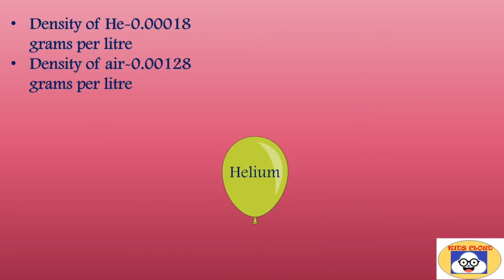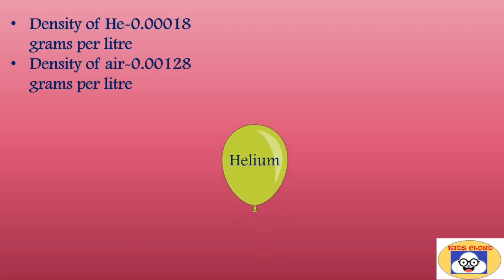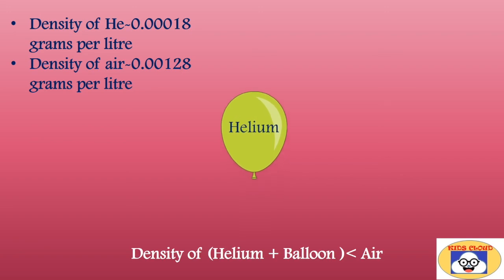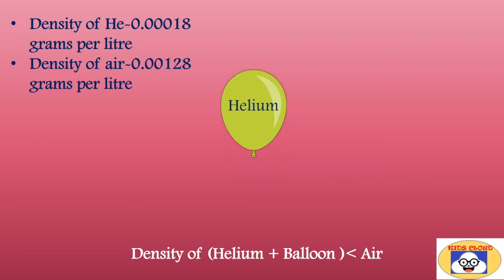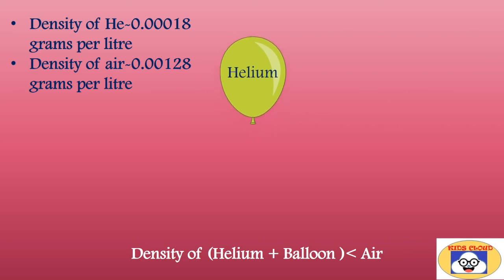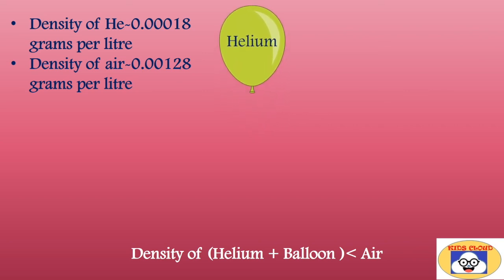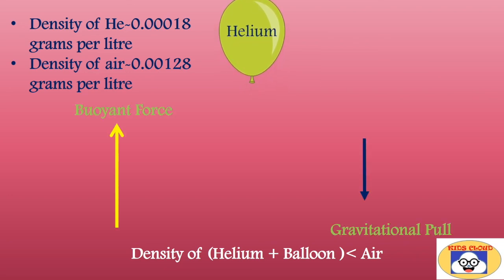On the contrary, helium is lighter and present in trace amounts in the air. The combined density of helium and balloon is less in comparison with the air. Hence, when you release the string of a helium balloon, the buoyancy force experienced by it is greater than the gravitational pull. As a result, it moves up, opposite to gravity, high in the air and floats.